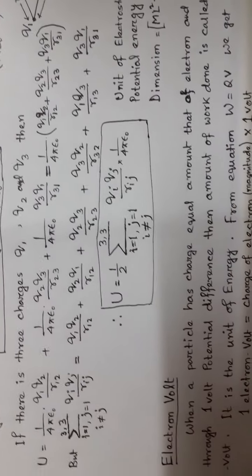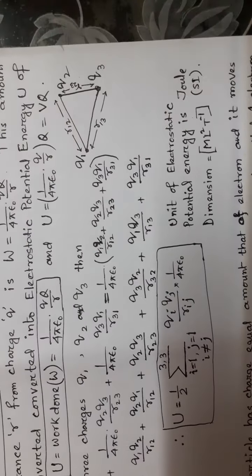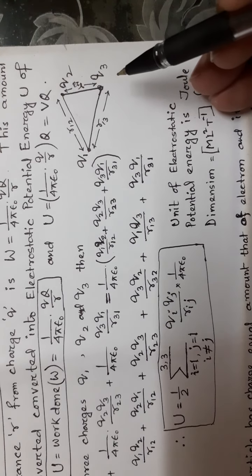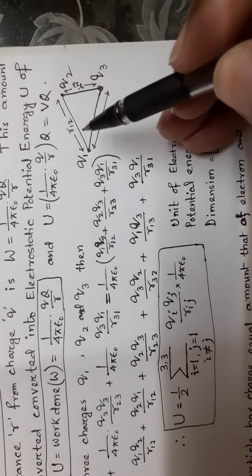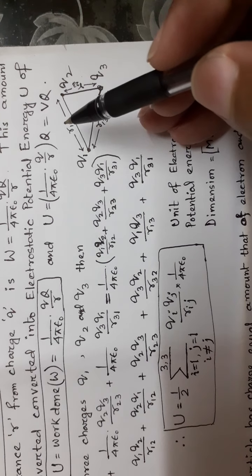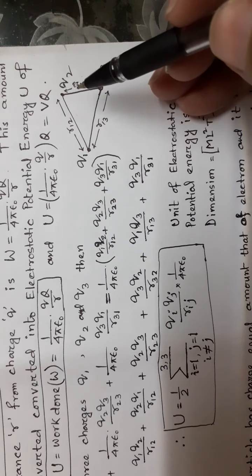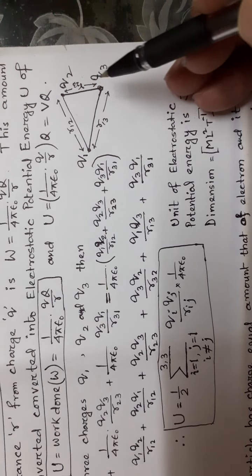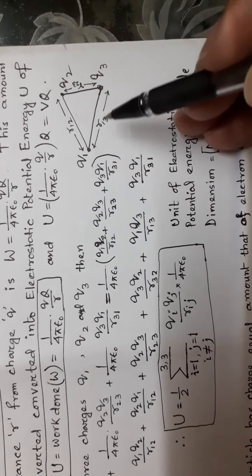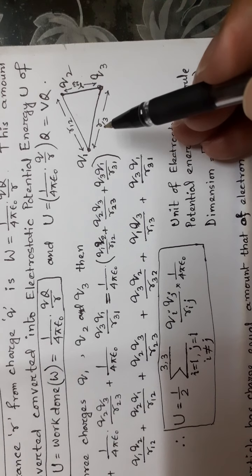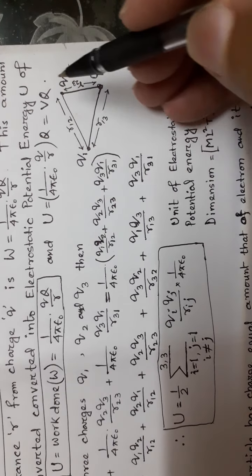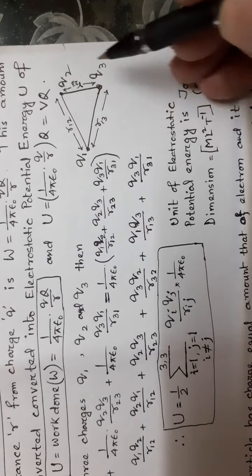For a system of 3 charges Q1, Q2, Q3, the distances between them are R12 (between Q1 and Q2), R23 (between Q2 and Q3), and R13 (between Q1 and Q3). The distances are specified for this system.